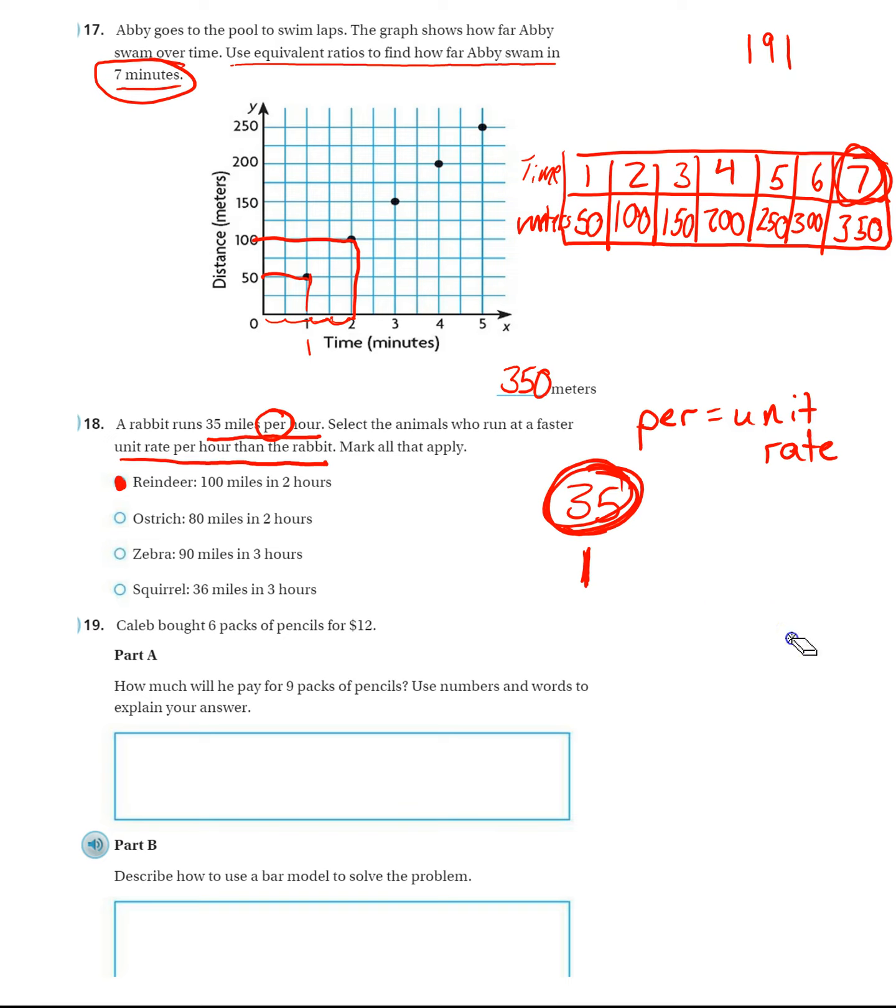So you're basically comparing all of these to 35 over 1. And any time you get a numerator bigger than 35, you bubble it in. So I'll do one more. I'll do the ostrich. 80 over 2. I want to make it a unit rate. Unit rate means I need that 1. To get 2 to 1, very easy, divide it by 2. That tells me what I need to do to the top. 80 divided by 2, or half of 80, is 40. Top number is bigger than the rabbit, so the ostrich is also faster.